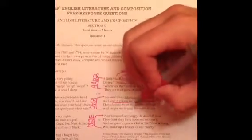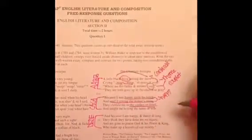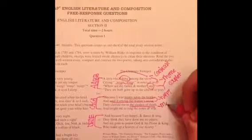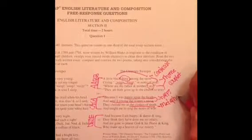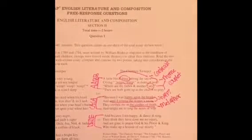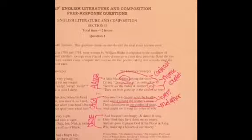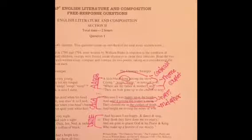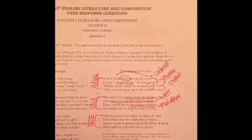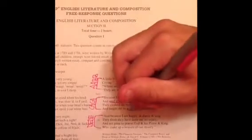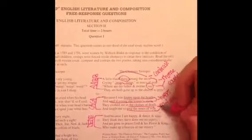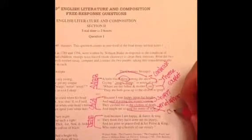The last two lines of the stanza: 'they clothed me in the clothes of death' - the clothes of death I believe is a metaphor for the outfit that the child is forced to wear while chimney sweeping, maybe an outfit required for chimney sweepers. 'And taught me to sing the notes of woe' - that's also a metaphor which I believe to be crying, singing the notes of woe, sadness.